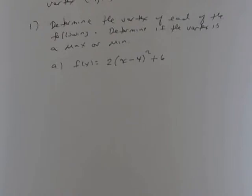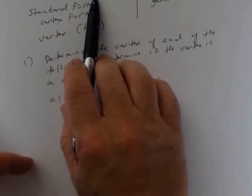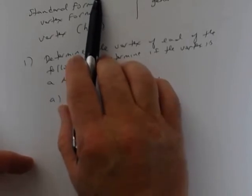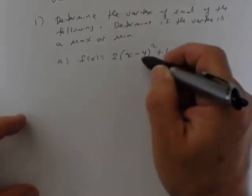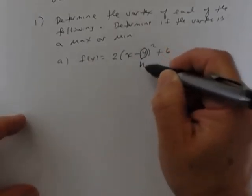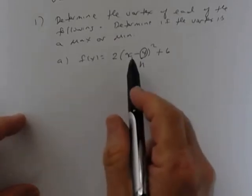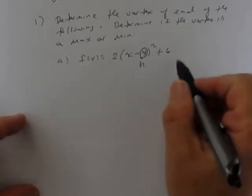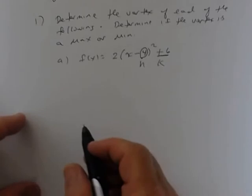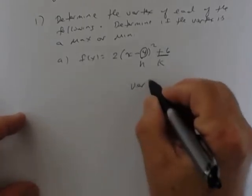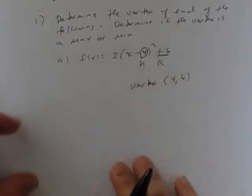What confuses people is seeing x minus 4 and thinking it's negative 4. It's not — the form is x minus h, where h is your x-coordinate. You see x minus 4, so 4 is your h. Then k is the constant out here, which is your y-coordinate. So the vertex is (4, 6).